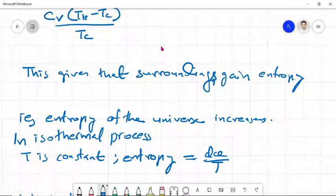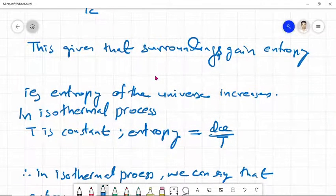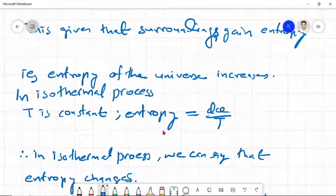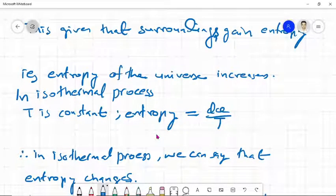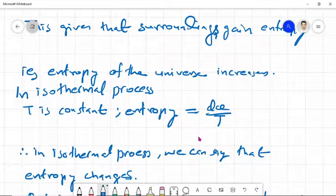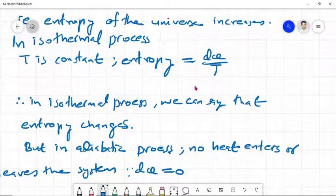In the case of isothermal process, T is constant. Therefore entropy equals DQ by T. So in isothermal process we can say that entropy changes occur. That means there is a change in entropy in the case of isothermal process.